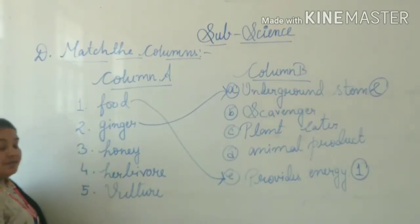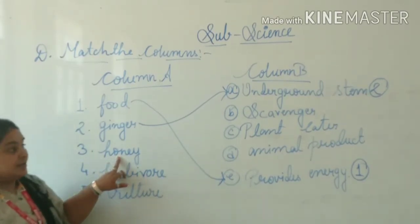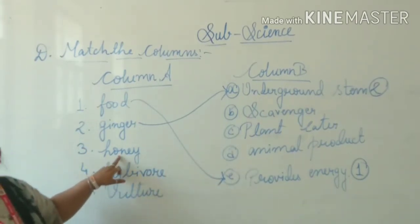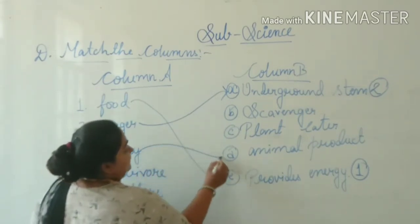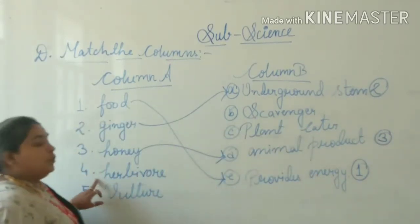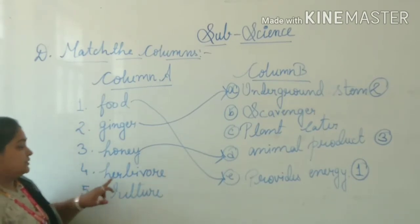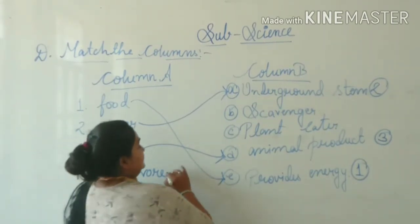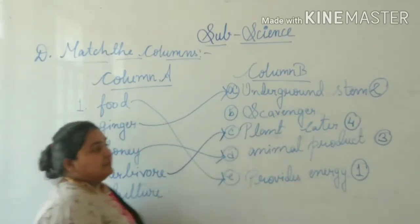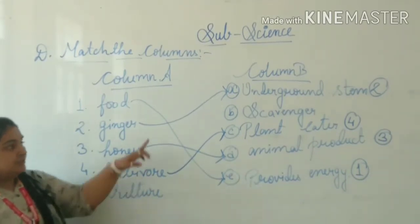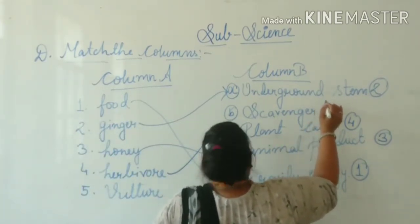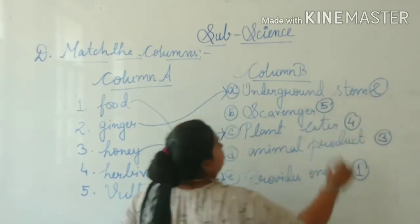Number three is honey. From where do you get honey? Honey is an animal product, because honey is provided by bees, and you all know very much about it. Number four — the word herbivore means that they are plant eaters; they usually eat plants. That is number four. The last is vulture. Actually, the vulture is a scavenger, as they feed on the flesh of dead animals. So number five is scavenger.